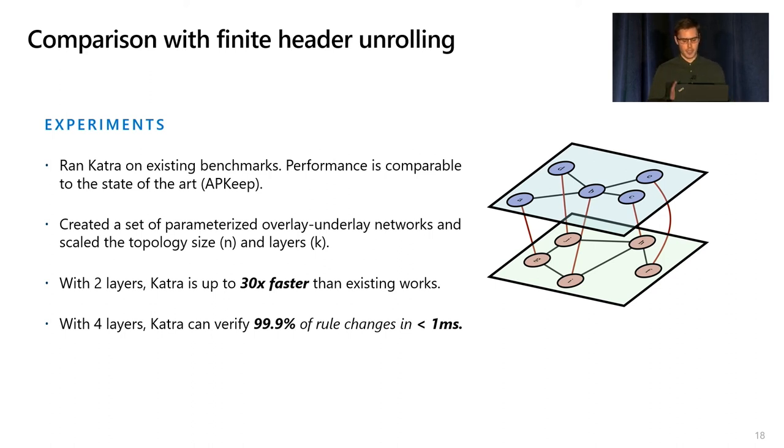We then created another set of underlay and overlay benchmarks where we vary the size of the network and the number of layers and found that Katra was up to about 30 times faster than existing algorithms, and this advantage grows larger when the network gets bigger or the number of layers grows. Finally, Katra is fast. Even for four layers, we can verify 99.9% of rules in well under one millisecond.